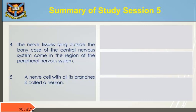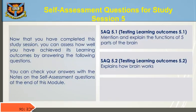A nerve cell with all its branches is called a neuron. This is the end of Study Session 5.